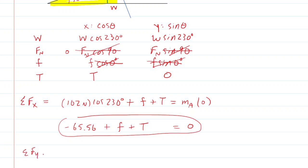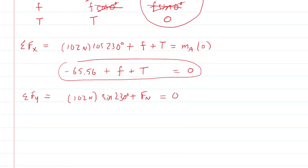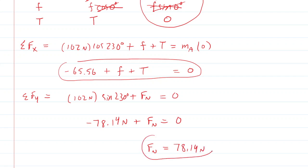Let's turn to the sum of forces in the y-direction. We take the weight of 102 newtons multiplied by the sine of 230, plus Fn, and everything else zeroed out. Computing 102 times sine of 230 gives negative 78.14. Adding 78.14 to both sides, we see the normal force on block A is 78.14 newtons. That's going to come in handy in a moment. But now we have to turn over to block B and draw the free body diagram for that block.